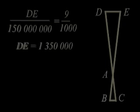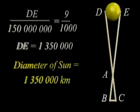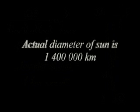Solving, we find our estimate for the size of the sun is 1,350,000 kilometers. Modern astronomers have determined that the diameter of the sun is 1,400,000 kilometers. Our simple solar projector produced a pretty good estimate for the size of the sun.